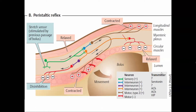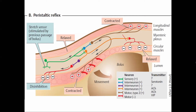Peristalsis is faster in the proximal intestine and slower in the terminal intestine. It takes about 3 to 5 hours for the chyme to travel from the pylorus to the ileocecal valve. The contraction behind the bolus is due to the release of acetylcholine and substance P. Relaxation in the forward direction is due to vasoactive intestinal polypeptide and nitric oxide. When there is stretch or mechanical stimulation, serotonin is released, which stimulates retrograde neurons causing contraction of circular muscle behind the bolus, and anterograde neurons causing relaxation and longitudinal muscle contraction in the forward direction.